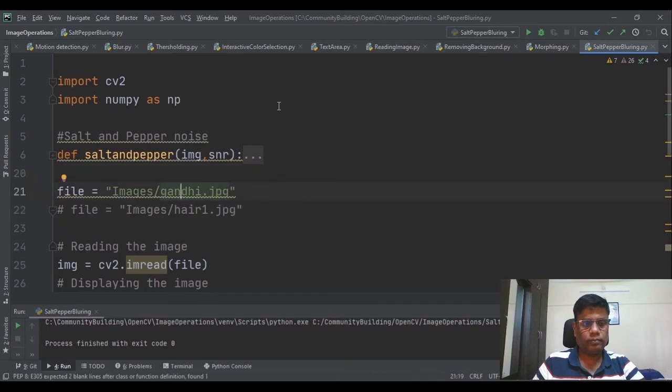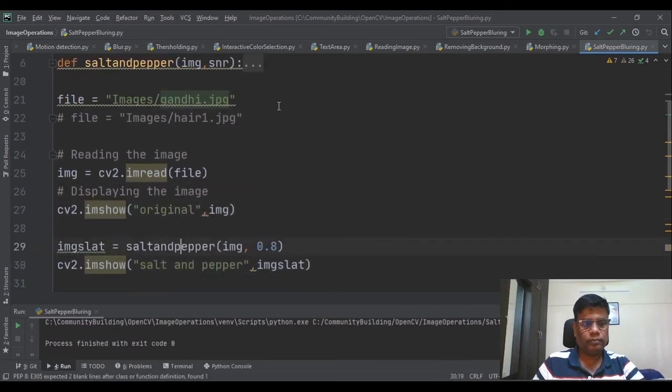I have two files. One is Gandhiji and Haier file. First, we will open this file and display those things, how the image looks like. Then we will apply salt and pepper on the image with sigma equal to 0.8.